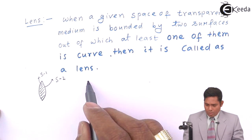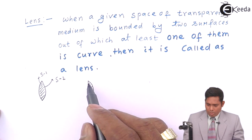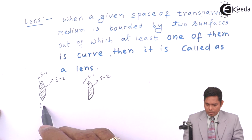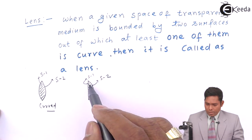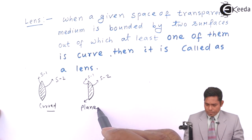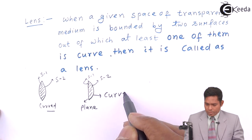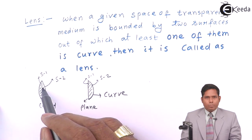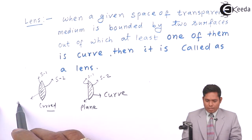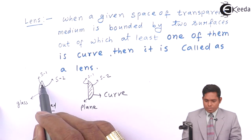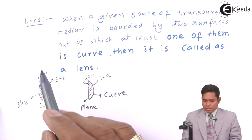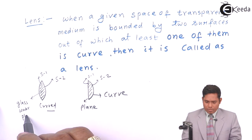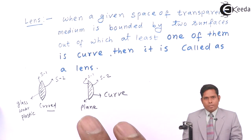I can have a shape like this. Here surface one and surface two — both surfaces are curved. Here this surface is plain and this surface is curved. So these are lenses. This medium can be any transparent material. It can be glass, it can be water, it can be plastic or anything you like.